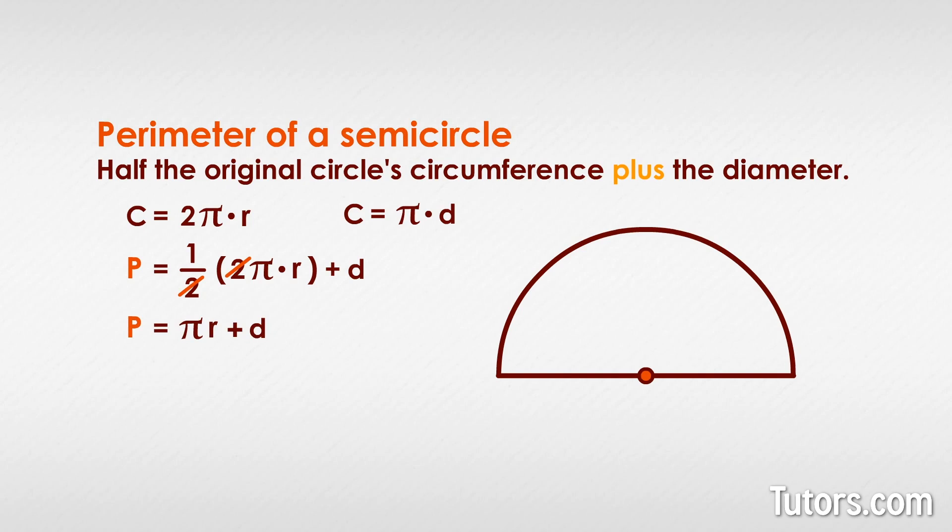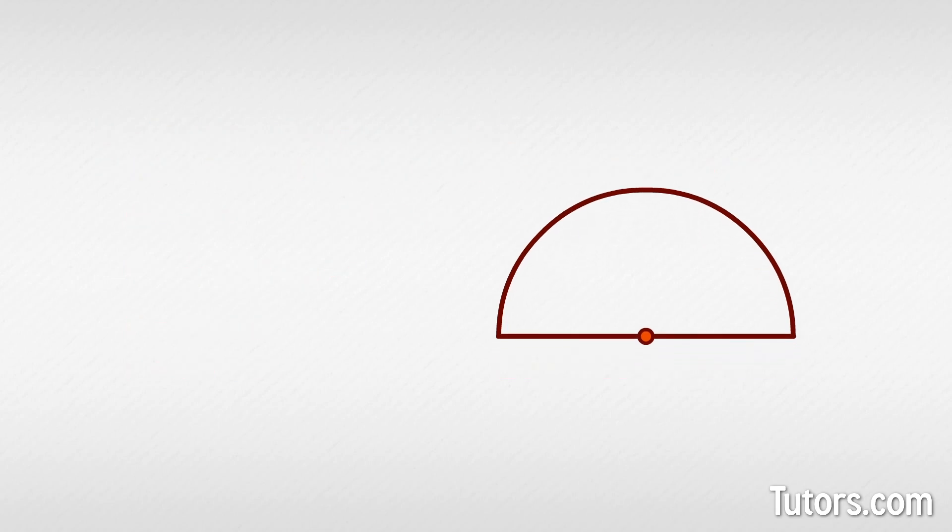Using the substitution property of equality, you can also replace diameter with radius throughout. Feel free to pause the video and try it with the examples in the try-it section of the article below. Now let's discuss the area of a semicircle.